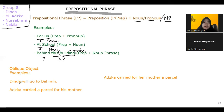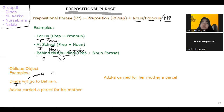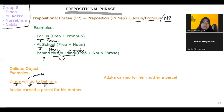Here is the example of an oblique object. For example, 'Dinda will go to Bahrain.' So which part is the prepositional phrase? We know that 'Dinda' is the subject and 'go' is the verb. If we focus further, 'will go' is actually a verb phrase because 'will' is a modal — will, would, shall, should. Which means that 'to Bahrain' is the prepositional phrase, and 'will go' is a verb phrase. This shows that even though 'Dinda will go' is already a sentence, when we add 'to Bahrain,' 'will go' directly functions as the verb.